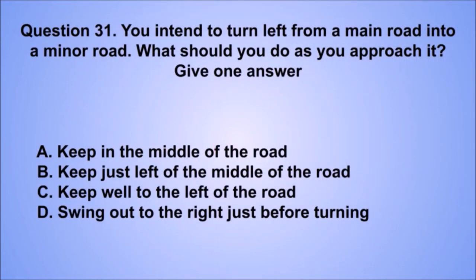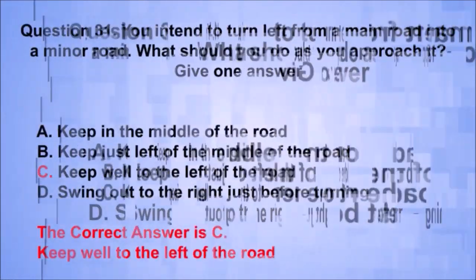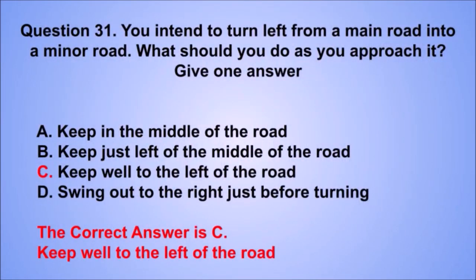Question 31. You intend to turn left from a main road into a minor road. What should you do as you approach it? The correct answer is C: Keep well to the left of the road.